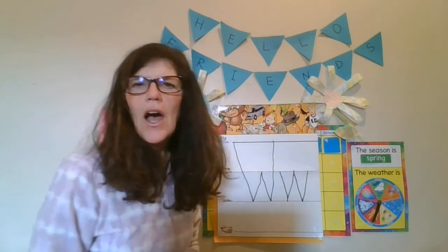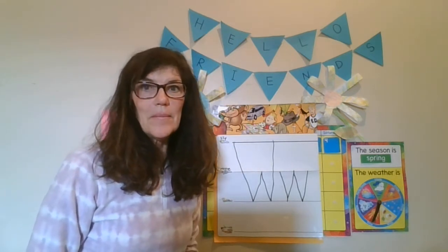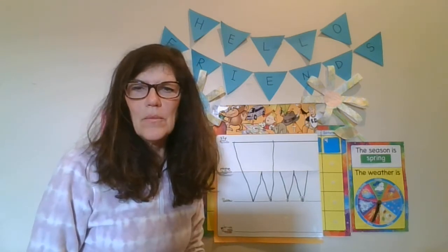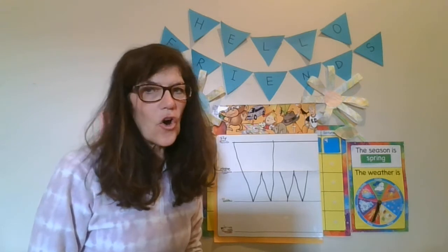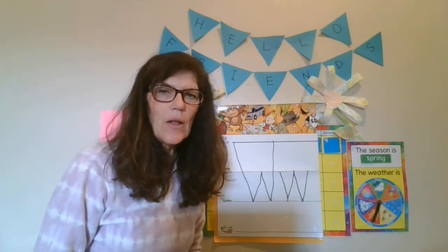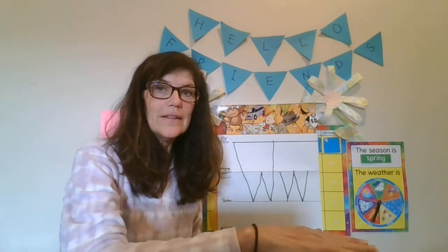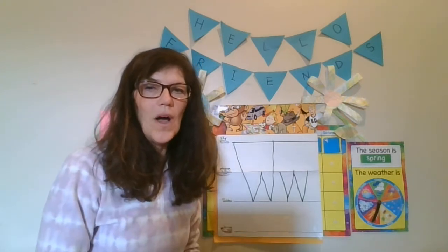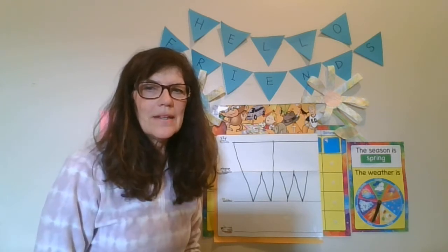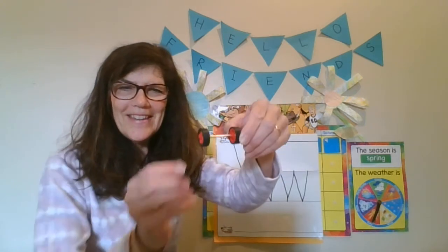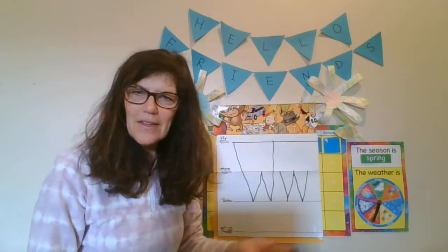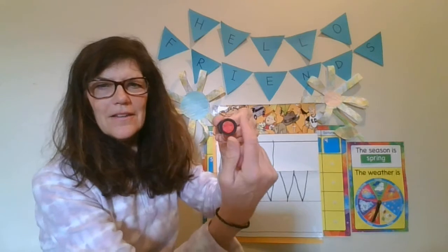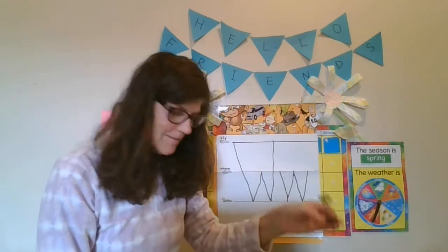Let's see what else I have in my box. So this is something that's a circle shape, and it's on things that move — like cars and bikes. It helps things roll along. Can you think what it is? It starts with the W sound — a circle shape, helps things go. Wheels! A wheel. Wheels make things go, and it is in the shape of a circle.